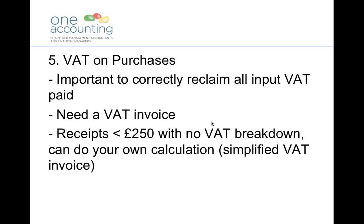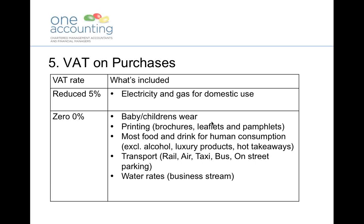A common thing we find, particularly with small items bought out of petty cash, is where you don't actually get a VAT invoice from the shop. Say you need some batteries and you go to Tesco — they aren't going to give you an invoice that breaks down the VAT. If that receipt is less than £250, you can actually calculate the VAT yourself. You need to make sure the VAT registration number is on the receipt, and if you know it's a standard-rated item, divide it by one sixth to get the VAT. This is known as a simplified VAT invoice.